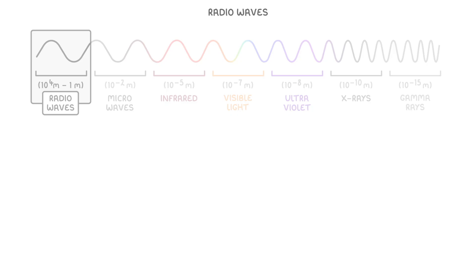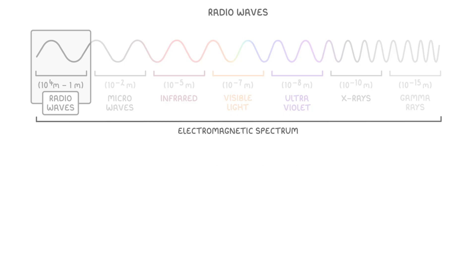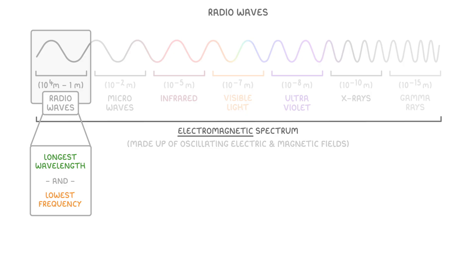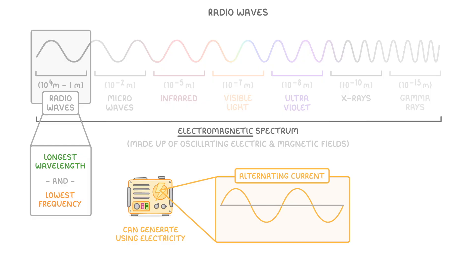Radio waves are part of the electromagnetic spectrum, and they have the longest wavelength and the lowest frequency of all of the electromagnetic waves. The reason that we call this whole spectrum electromagnetic is that they're made up of oscillating electric and magnetic fields. You just need to know that we can generate them using electricity in the form of an alternating current, because alternating currents are made up of oscillating charges.